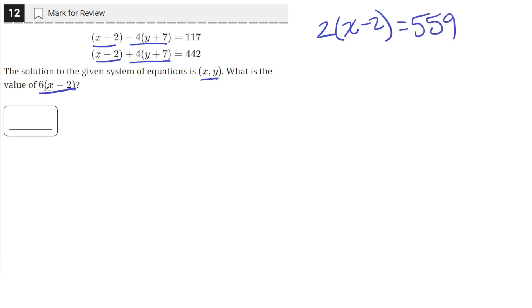And in order to find the value of 6 times x minus 2 what we can do is just multiply this whole equation by 3. So we'll get 6x minus 2.